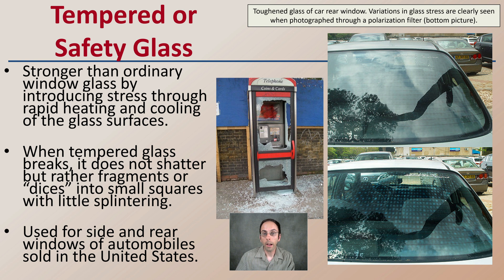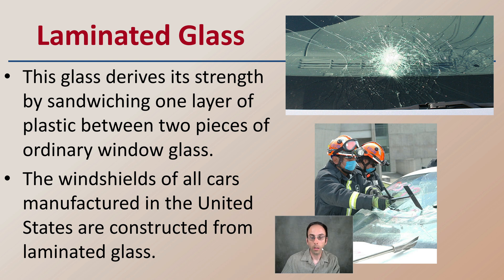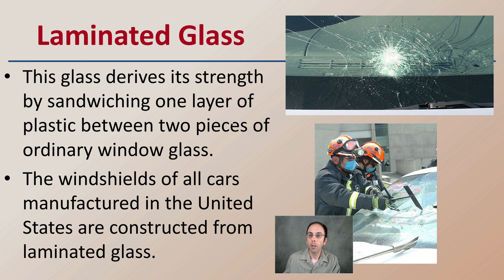It's important to note side and rear windows specifically, because laminated glass is the glass used on the front windshield. Laminated glass derives its strength by sandwiching one layer of plastic between two pieces of ordinary window glass. The windshields of all cars manufactured in the United States are constructed of this laminated glass. As a result, it doesn't shatter and break through — it fractures but stays together, which is very important so nothing comes at the driver or passengers.